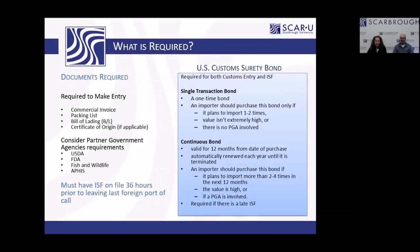For making entry, you need a commercial invoice, packing list, bill of lading, and certificate of origin if applicable. Always consider what's going to be required for PGAs — partner government agencies — such as FDA product codes, registration numbers. If it's a Lacey Act item, we need details about the genus and species of the wood. We take all of this information and put it together to make that entry for you.